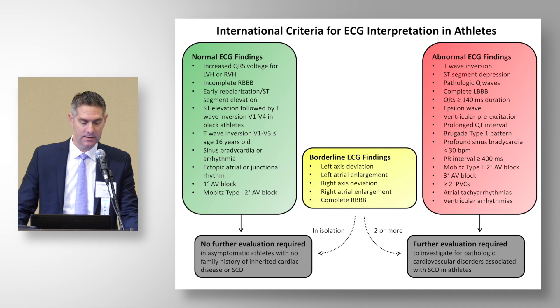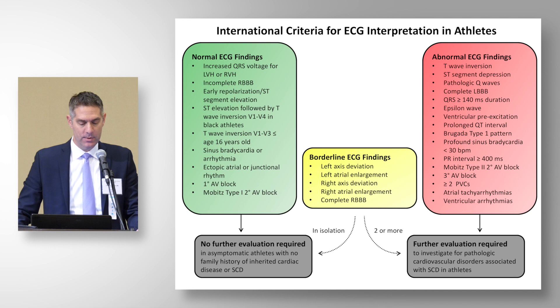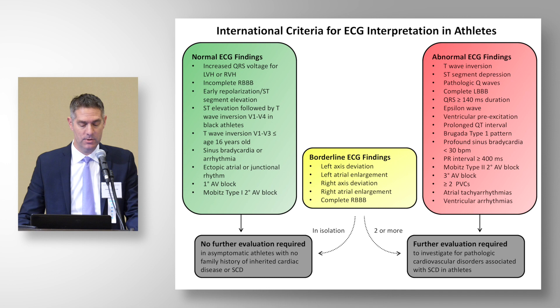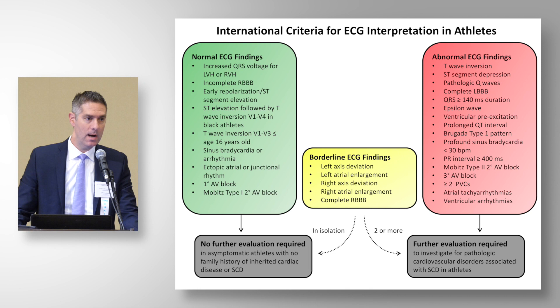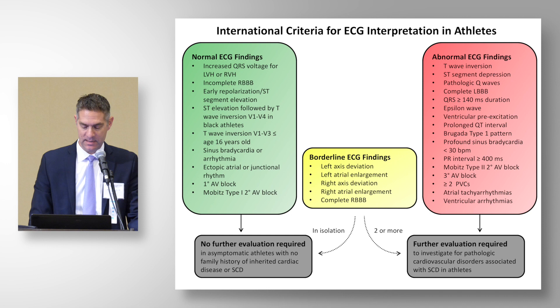These are interpreted with the assumption that this is an asymptomatic athlete with no family history of inherited cardiac disease or sudden cardiac death. If you have a normal ECG finding, no further evaluation is required. In contrast, an abnormal finding in the red box, or two or more borderline findings, requires additional investigation.